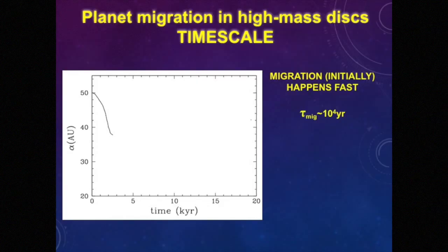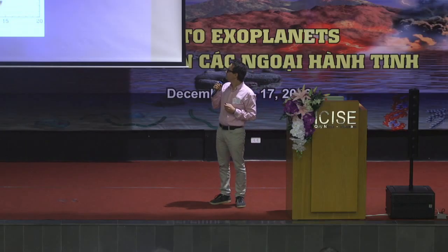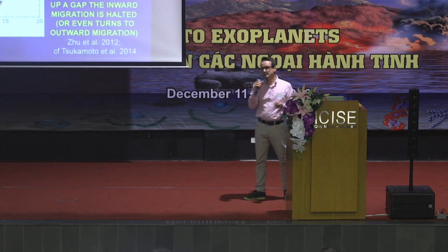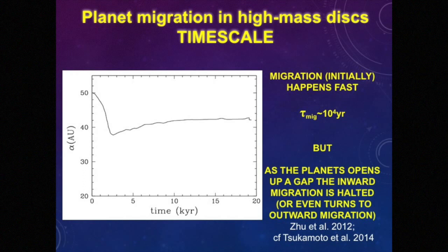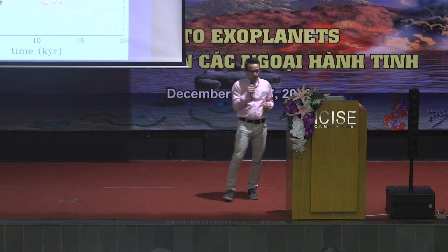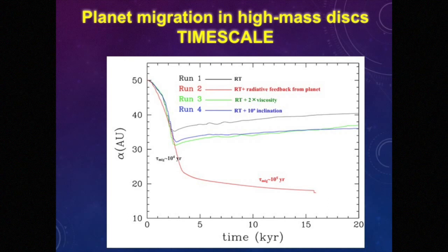When I check what happens with the migration — the semi-major axis of the planet plotted as distance from the star versus time — initially the migration is fast, like the previous authors found, with a similar timescale of 10,000 years. But then, once the gap is opened up, the migration stops, and even turns out to change to an outward migration. I've done a few simulations varying the parameters. The blue line is without radiative feedback from the planet, and the red line includes radiative feedback. When you include energy fed back into the disk from the planet, the migration continues for a longer period of time but eventually stops, and it turns from type 1 migration — fast migration — to a very, very slow migration.